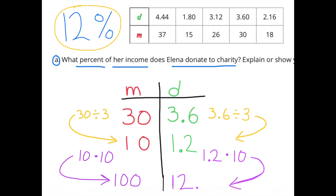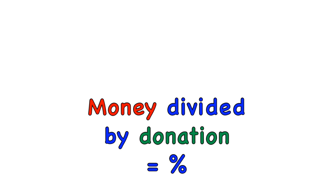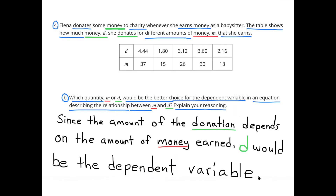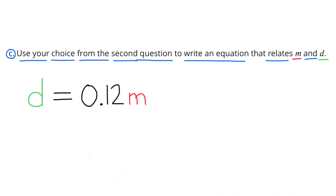If it was confusing to use a table, you could just use the amount of the donation divided by the money earned, and that would give you the percent. Part B: Which quantity, M or D, would be the better choice for the dependent variable? Since the amount of the donation depends on the amount of money earned, D would be the dependent variable. Part C: Write an equation that relates M and D. My equation is D equals 0.12 times M.